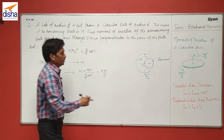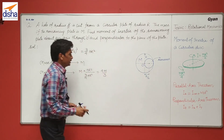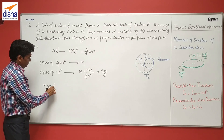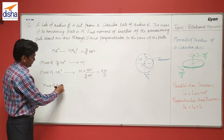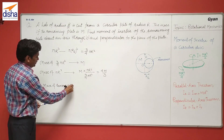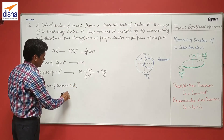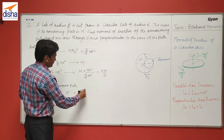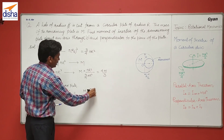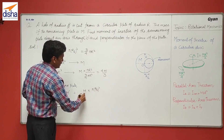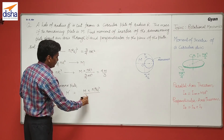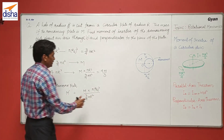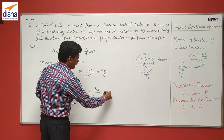Now we have to find the mass of the removed plate. The mass of the removed plate M dash equals (M times pi (R/2) squared) divided by (3/4 pi R squared), which gives us M/3.